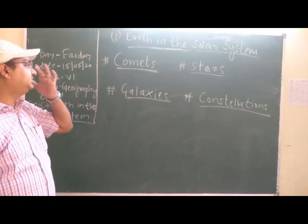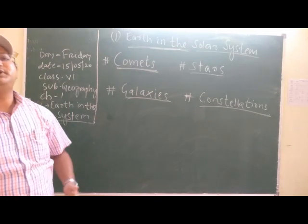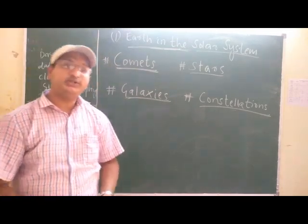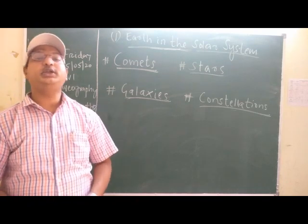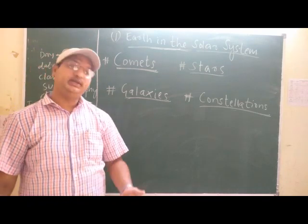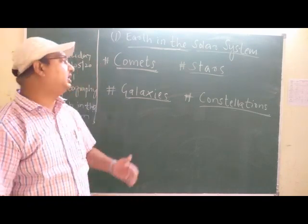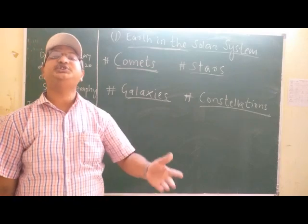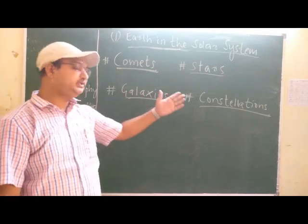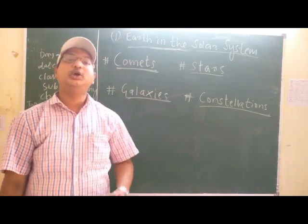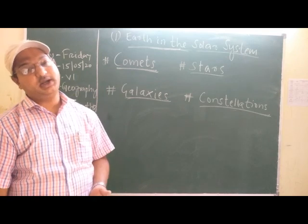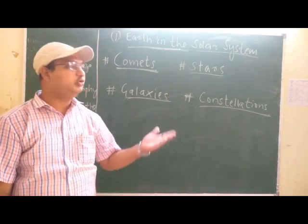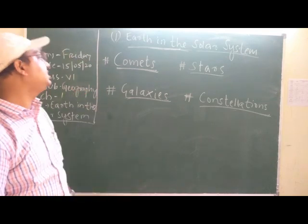The last section is about the different celestial bodies. In the previous class I told you what a celestial body is. A celestial body is a shining object — it may be a planet, it may be a star, it may be comets, asteroids, meteoroids — who have their own light, and there are some celestial bodies who don't have their own light.